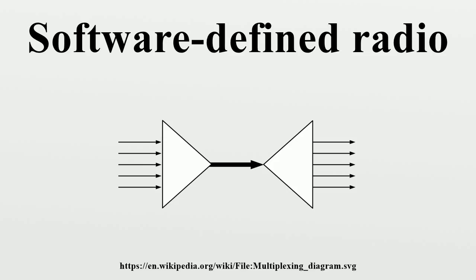The ideal receiver scheme would be to attach an analog-to-digital converter to an antenna. A digital signal processor would read the converter, and then its software would transform the stream of data from the converter to any other form the application requires. An ideal transmitter would be similar.